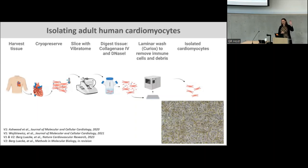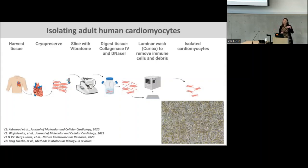We use a technology called laminar flow wash, which allows us to wash away debris and immune cells and end up with just cardiomyocytes without having to use centrifugation. If you've ever worked with cells in a laboratory and centrifuged them, you know that causes a lot of stress — cardiomyocytes will start to swell when you centrifuge them. So this method works really well. We get a pretty good yield and it only takes a few hours. We can now routinely do this from really any human heart tissue, from failing or non-failing.